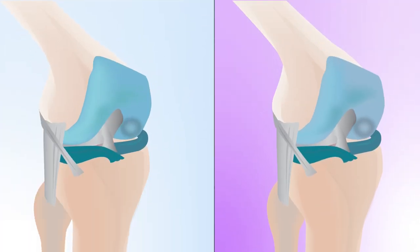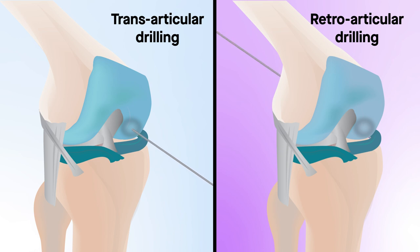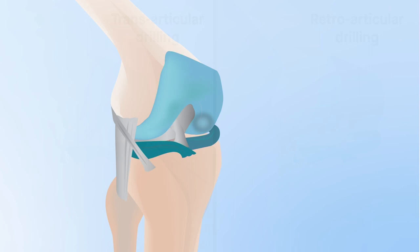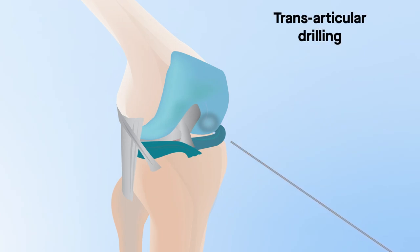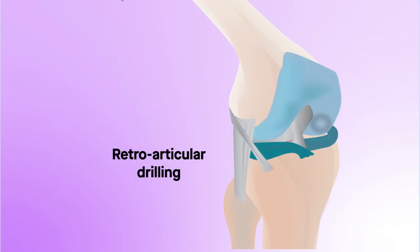As their names suggest, transarticular and retroarticular drilling differ in how they approach an OCD lesion with respect to the articular cartilage of the knee. The transarticular approach passes through the cartilage to reach the site of the injury. Meanwhile, the retroarticular approach passes through the back side of the bone to avoid damaging the cartilage that overlies an OCD lesion.